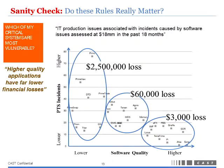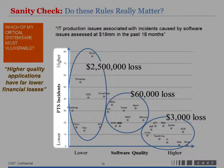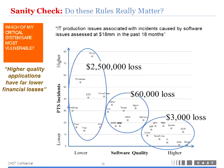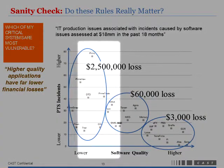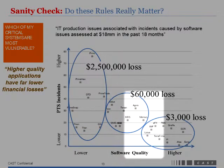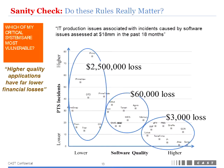Another sanity check: here they mapped out software structural quality and the incidents they've been finding, along with data on losses different departments are facing. They put this together to show their executives: the more you follow the best structural quality practices in the industry, the smaller your losses tend to be and the fewer incidents you have. The less you follow it, the more unpredictable it is. It's not that they're all losing money — it's just unpredictable. When you have a risk, sometimes it manifests, sometimes it doesn't, but it's still there.